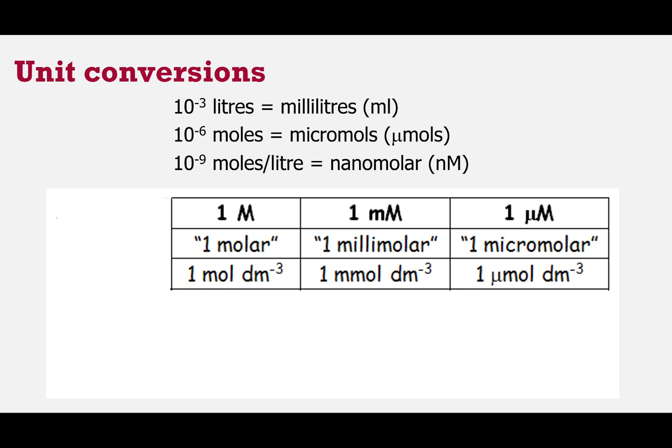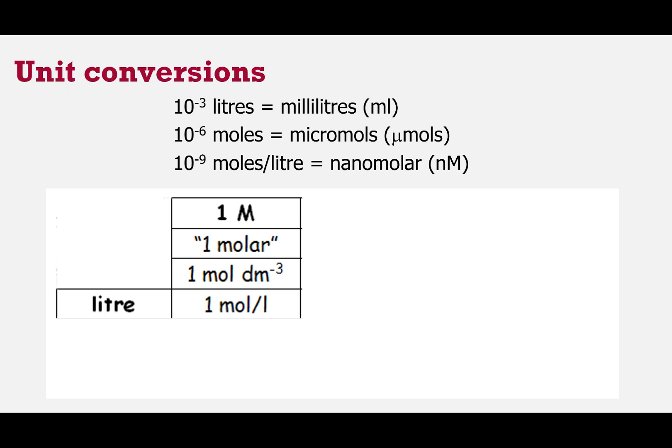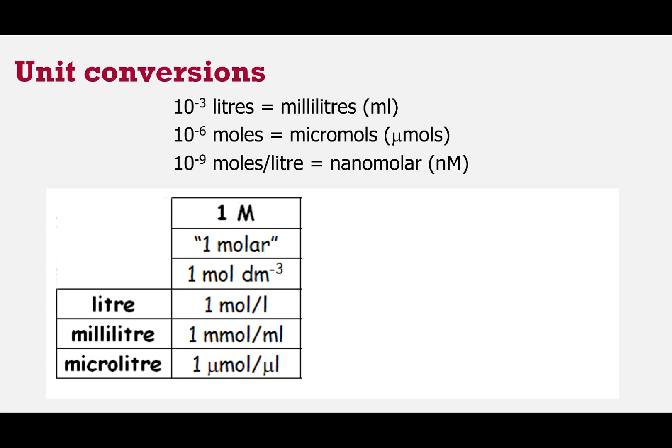When we do think about 1 molar, what we tend to be thinking about is that in terms of liters. So 1 capital M, 1 molar, means 1 mole per liter, and a liter is the same as a decameter cubed. The reason we tend to think about liters is that the volume we're using is likely to be very much smaller than that. We're unlikely to be using liter volumes; we're more likely to be using milliliters or indeed microliter volumes. And the beauty of taking the unit as being a liter or microliter is that 1 molar is 1 mole per liter, but it's also 1 millimole per milliliter and 1 micromole per microliter.